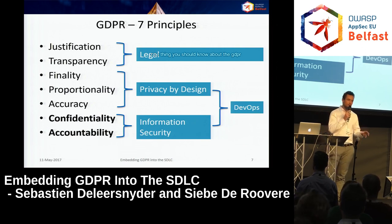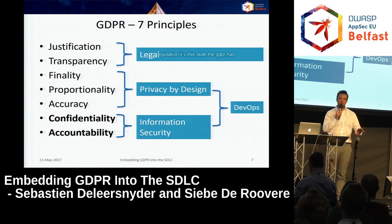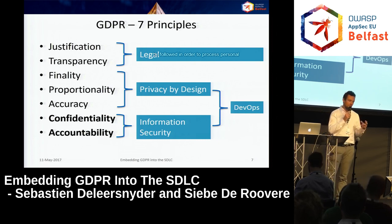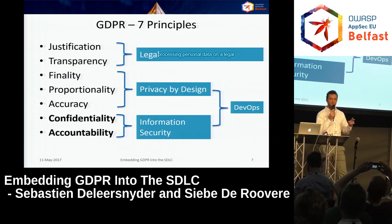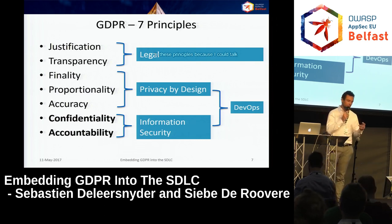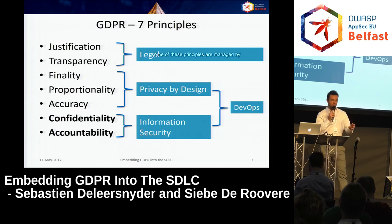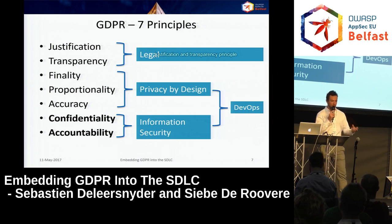If there's one thing you should know about the GDPR — it's a very long and difficult piece of legislation — it's this: the GDPR has seven principles which should be followed in order to process personal data legally. If you do not abide by one of these seven principles, you are processing personal data in an unlawful manner and should stop the processing. Some of these principles are managed by a legal department, such as the justification and transparency principle.